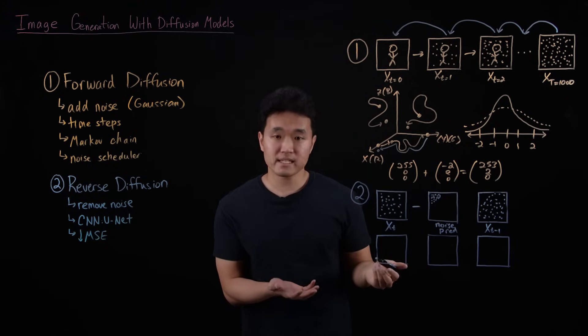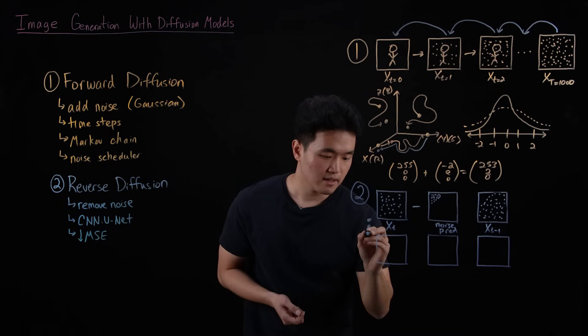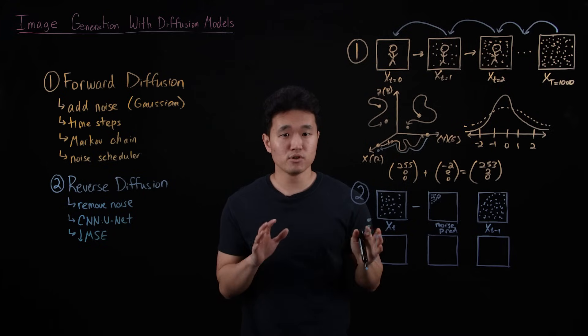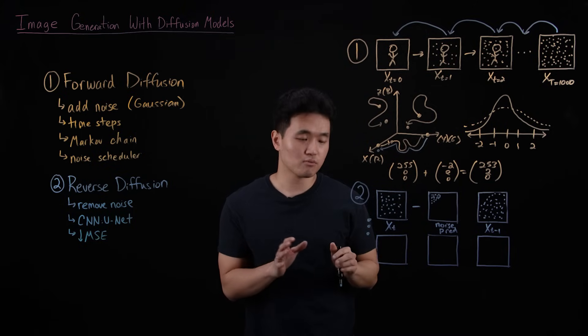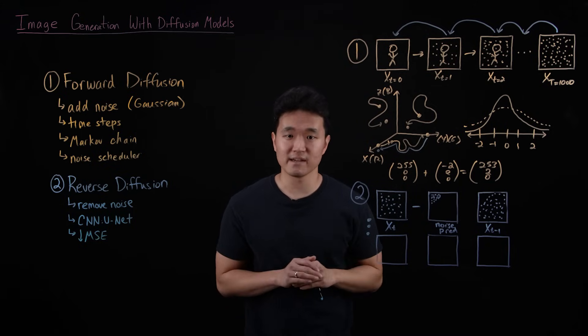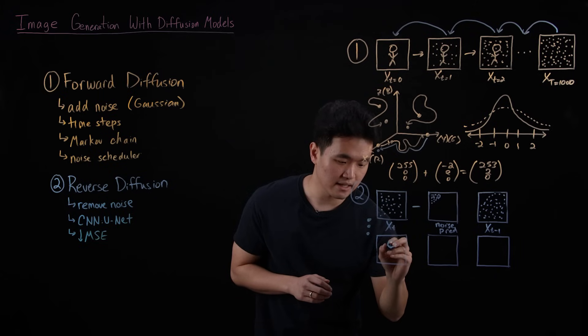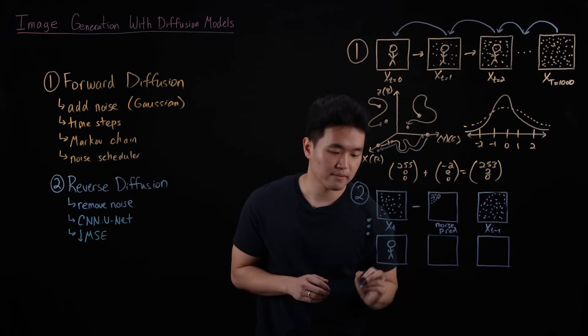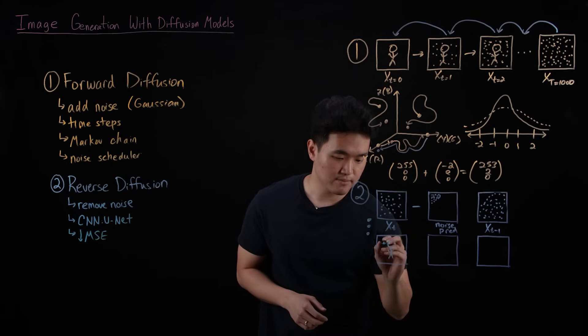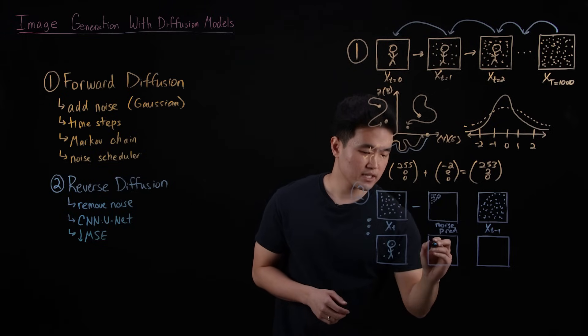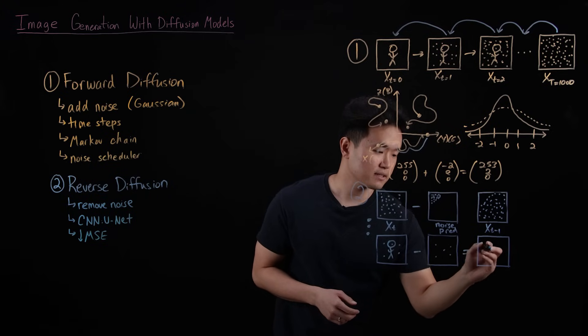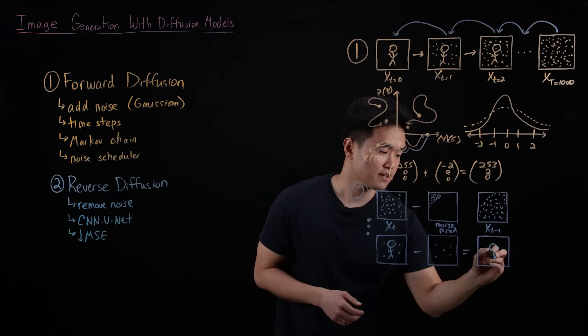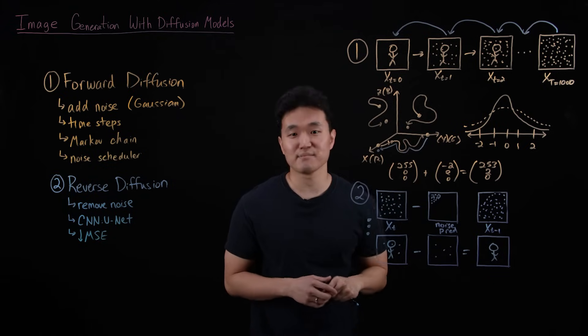Now if we repeat this process many times, over time, the model learns how to remove noise and very structured sequences and patterns in order to reveal more features of an image, say slowly revealing an arm and a leg. It repeats this process until it gets back to one final noise prediction, one final noise removal, and then finally our clear picture. And our person has magically reappeared.